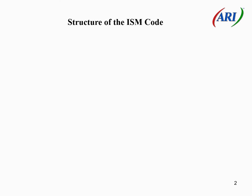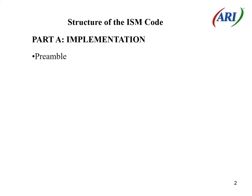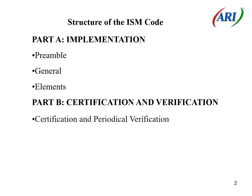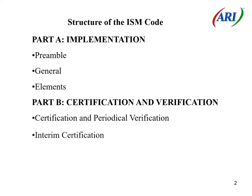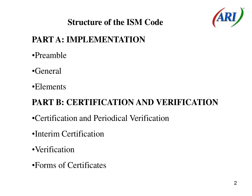Structure of the ISM Code Part A: Implementation, Preamble, General, Elements. Part B: Certification and Verification, Certification and Periodical Verification, Interim Certification, Verification.